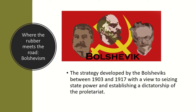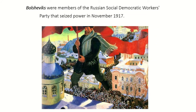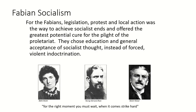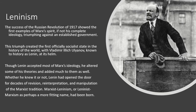Bolshevism was the strategy developed by the Bolsheviks between 1903 and 1917 with a view to seizing state power and establishing a dictatorship of the proletariat. The Bolsheviks were members of the Russian Socialist Democratic Workers' Party that seized power in Russia in November 1917. A subset was called Fabian Socialism. For the Fabians, legislation, protest, and local action was the way to achieve socialist ends and the greatest potential cure for the plight of the proletariat. They chose education and general acceptance of socialist thought instead of revolution or forced, violent indoctrination.